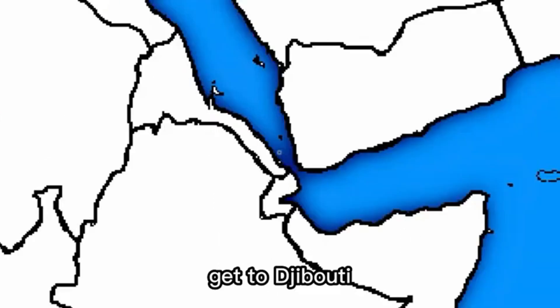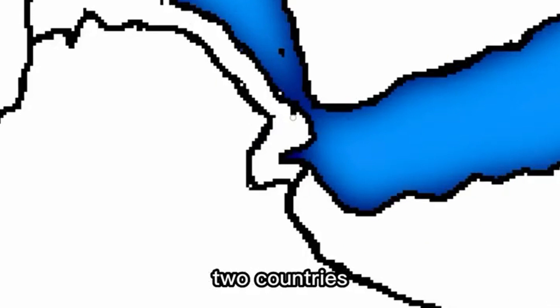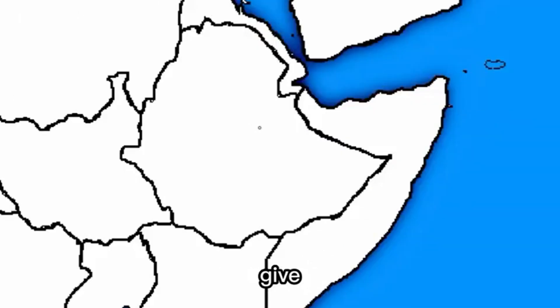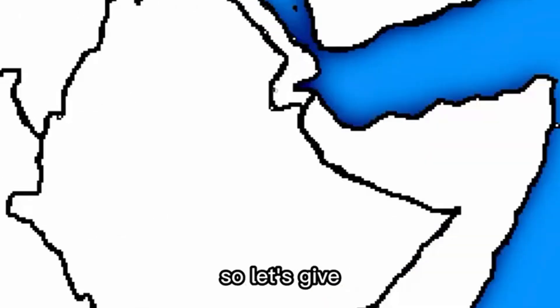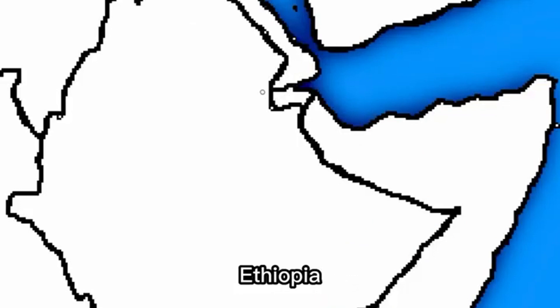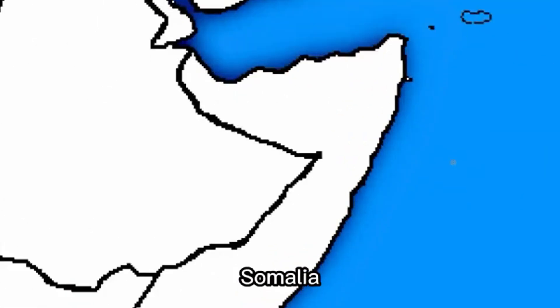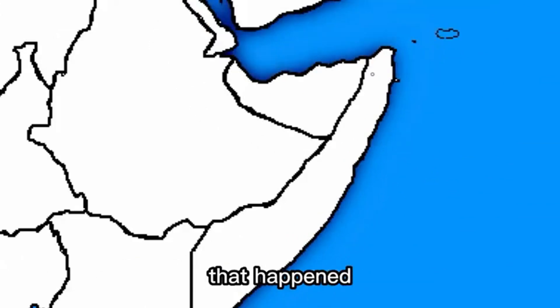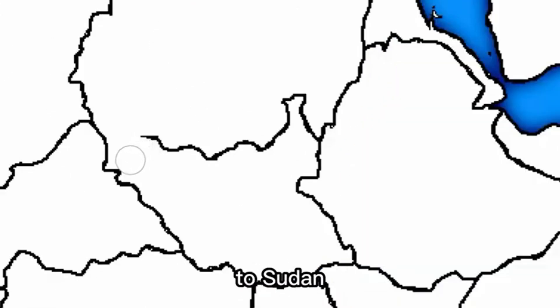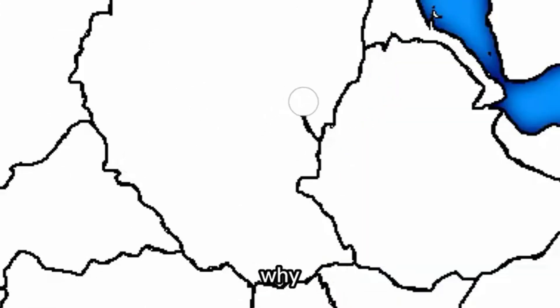I really don't like what's happening between Mauritania and Mali, so let's just fix that. Now let's get to Djibouti and Eritrea, where I want to see a union between these two countries. I also want to give Ethiopia some coastline, so let's carve a little bit out of this union for Ethiopia — now Ethiopia can trade by sea. Let's give Somaliland its independence — yep, that happened — and let's give South Sudan to Sudan, because why not.